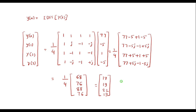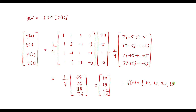Therefore, the circular convolution between x1 of n and x2 of n is y of n, which is equal to {17, 19, 22, 19}.